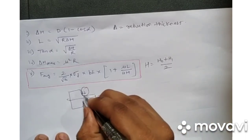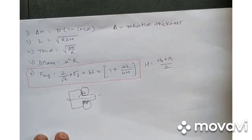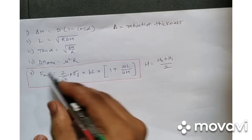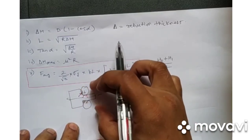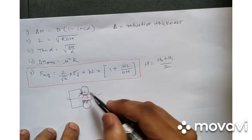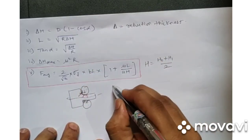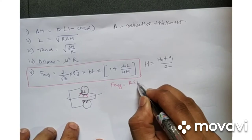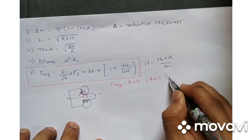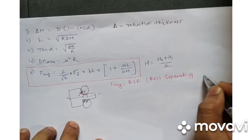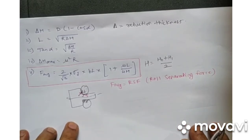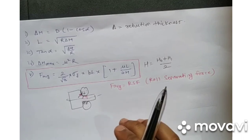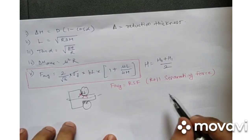The rollers apply force on the strip to deform it, but the strip also applies an equal and opposite reaction on the rollers. This reaction force is also called the roll separating force, because it tries to push the rollers away from the strip — it tends to separate the rollers.